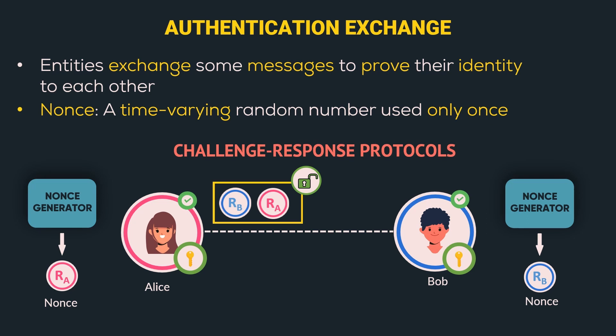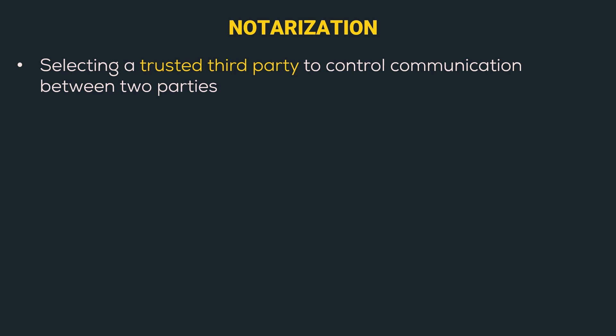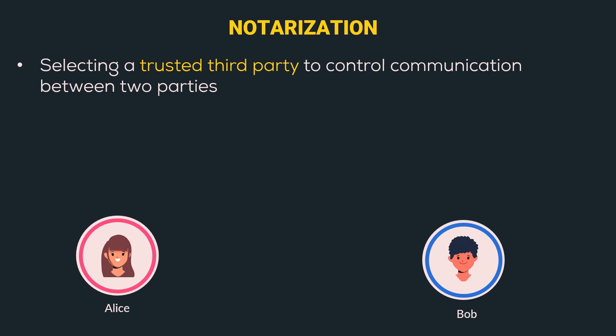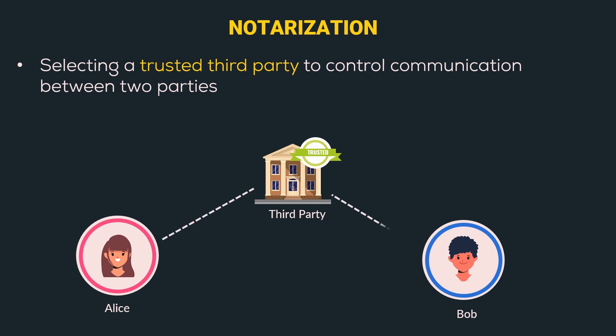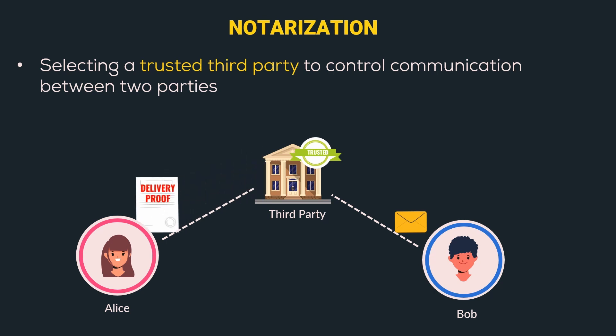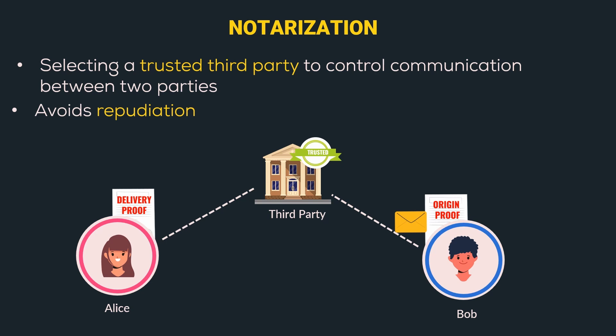Such systems are called challenge-response protocols, which we will cover in greater detail in future videos. Let's move to the next security mechanism: notarization. In notarization, we select a trusted third party to control communication between two parties. The trusted third party acts as a mediator between Alice and Bob. Whenever Alice wants to send a message to Bob, she sends it to the third party, who then forwards it to Bob. Once delivered, the third party generates a delivery proof and sends it to Alice, and similarly generates an origin proof for Bob. Since both have their respective proofs, neither can deny sending or receiving the messages — hence notarization avoids the repudiation security attack.